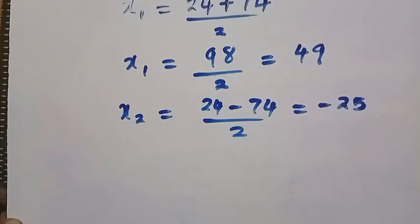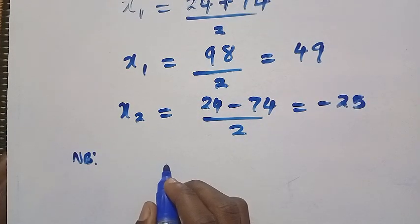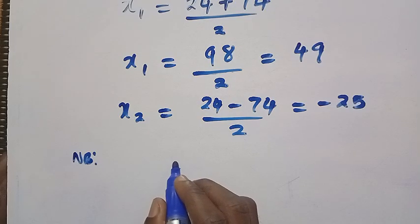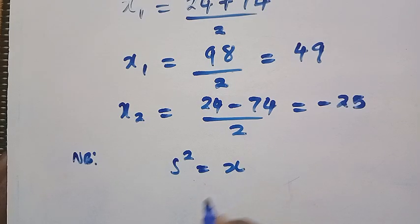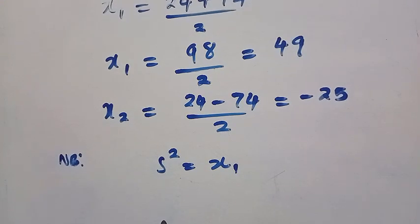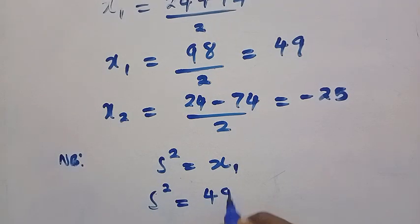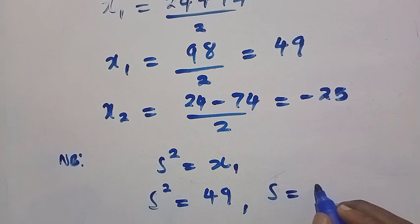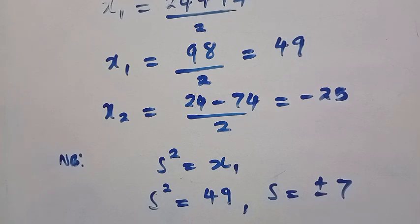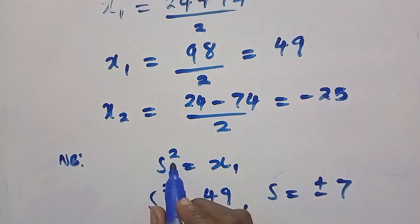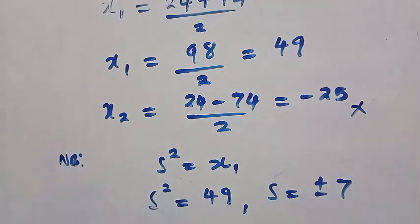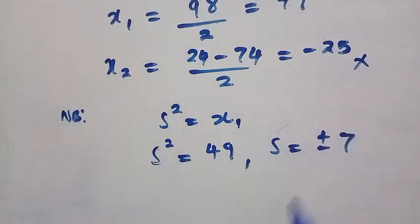Now let's consider these values. Recall that we let X squared equal t. Taking t1 equals 49, we get X squared equals 49, so X equals plus or minus 7. We note that X squared must be positive, so we keep both plus 7 and minus 7 for further consideration. The value t2 equals minus 25 gives no real solution, so we discard it.